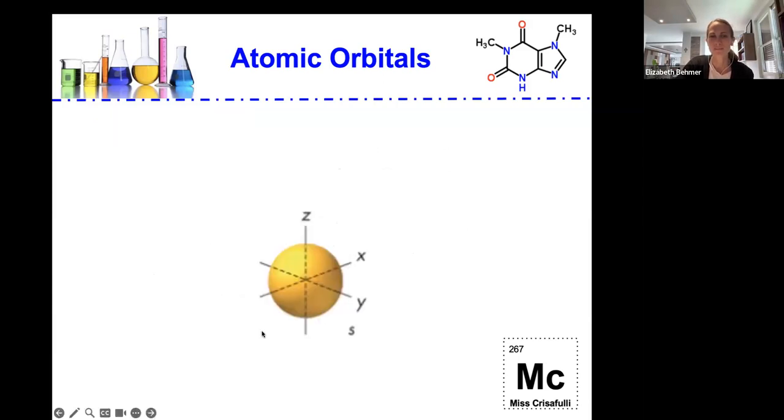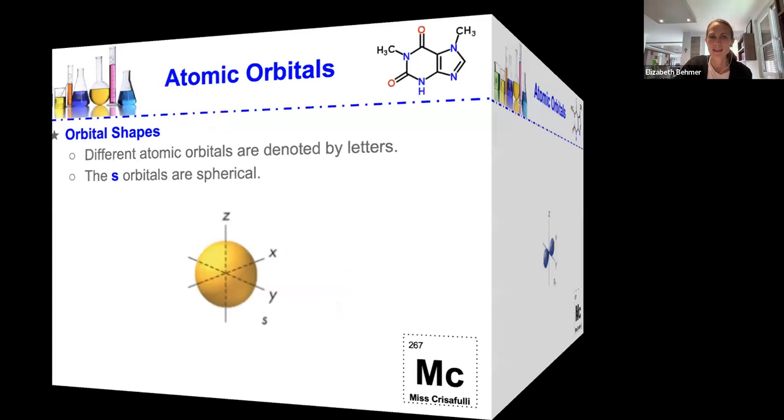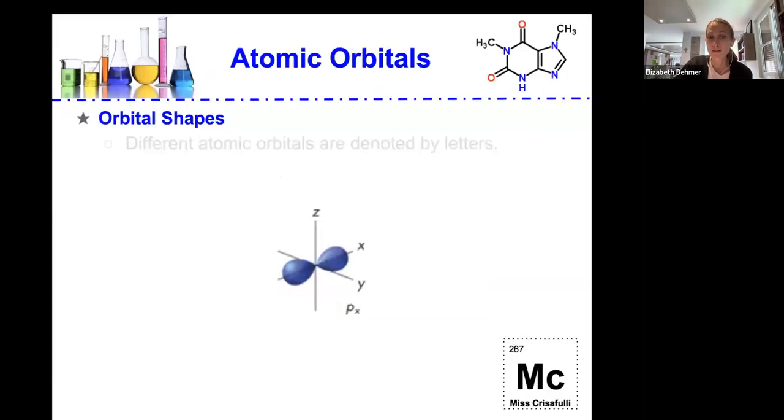So let's take a look at these atomic orbitals. These orbital shapes are different atomic orbitals. They're denoted by letters. The s orbitals are spherical.